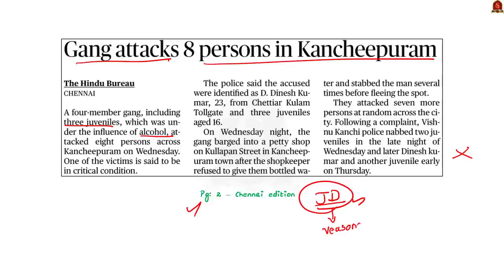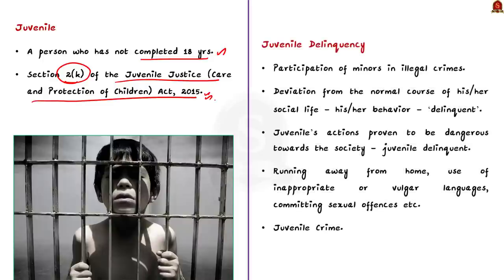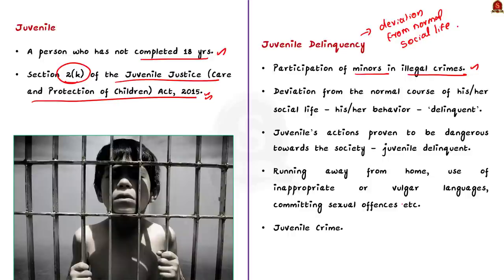Who is a juvenile? A juvenile or child is a person who has not completed 18 years of age, as per Section 2(k) of the Juvenile Justice (Care and Protection of Children) Act 2015. What is juvenile delinquency? Juvenile delinquency refers to participation of minors in illegal crimes. When a person deviates from the normal course of social life, their behavior is termed delinquent. When a juvenile's action proves dangerous to society and to themselves, they may be called a juvenile delinquent. The act of delinquency may include running away from home, use of vulgar language, committing sexual offenses, etc.